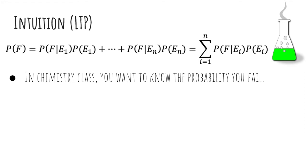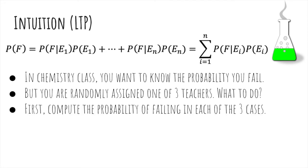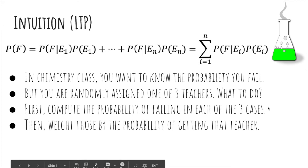Let's say you're in a chemistry class and you want to know the probability of fail, but you don't get to choose your teacher, so you're randomly assigned one. You'll compute the probability of failing in each of the three classes and weight those by the probability of actually getting that teacher.